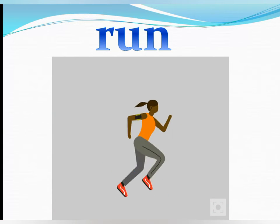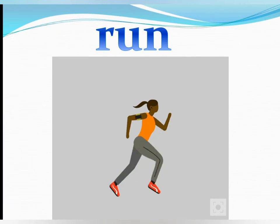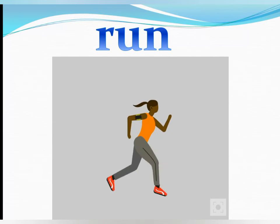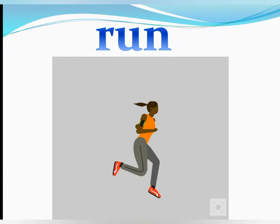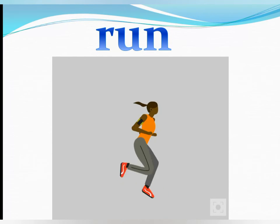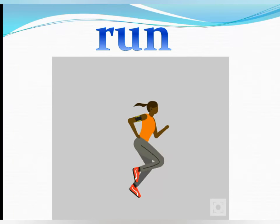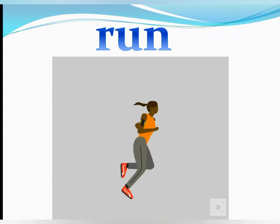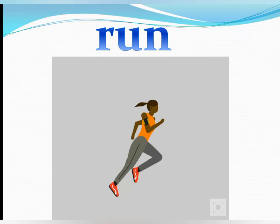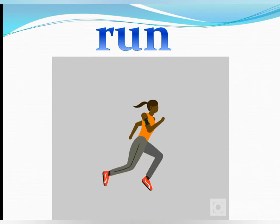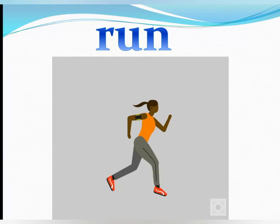Teacher will show the next picture and ask what the girl is doing. About 95 to 98 percent of students will know she is running. Students will perform the action of running while standing on their seats and repeat the word 'run' about 6 to 8 times.